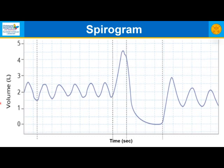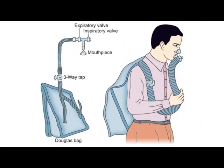This is what a spirogram would look like. Someone breathes in and out normally, takes a deep breath all the way in, and then exhales — in this case forcibly — all the way out, and then perhaps breathes again. This can be obtained from a classical spirometer.